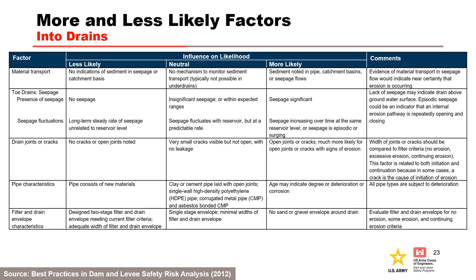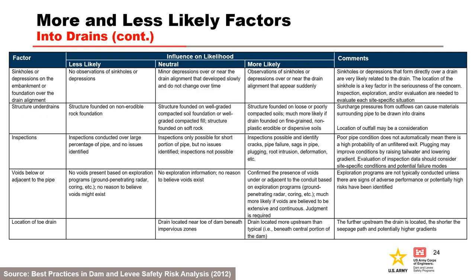This table from the Best Practices Manual can be used to help assess the likelihood of open defects in conduits, pipes, culverts, or drains. It can be used as a starting point, but the risk team must develop project-specific more likely and less likely factors to guide subjective probability estimation. The factors in this portion of the table address material transport, presence of seepage, presence of open cracks or joints, pipe characteristics, and filter and drain envelope considerations, as well as sinkholes or depressions, structure under-drains, inspections, voids below or adjacent to the pipe, and the location of toe drains.